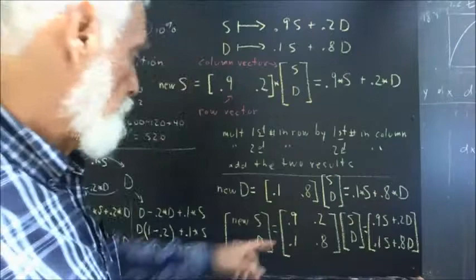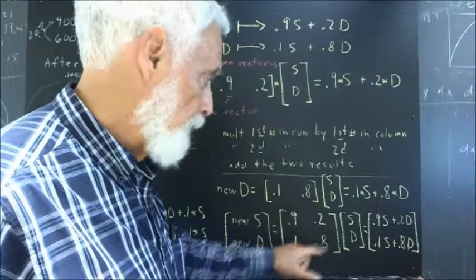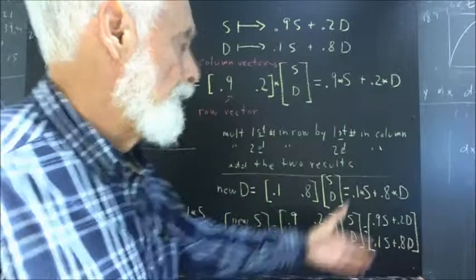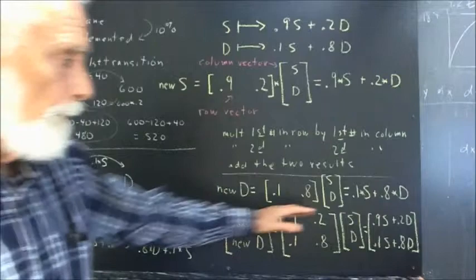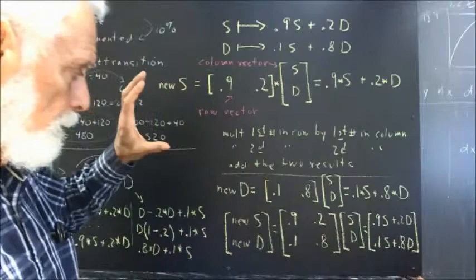And we're going to put the second row, we're going to put the 0.1, 0.8 in the second row so that when it multiplies the S, D, we get 0.1 S plus 0.8 D, which is the new number of demented, as it must be. So there's very good common sense to the rules for multiplying these things.